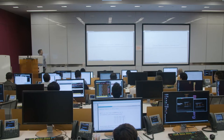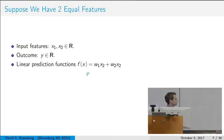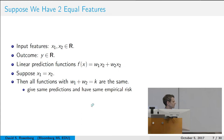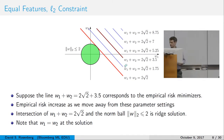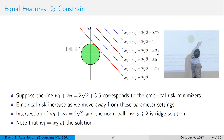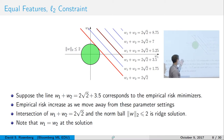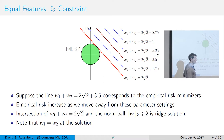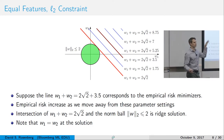Let's look at a picture. Two equal features, a linear prediction function — some linear combination of x1 and x2. All parameter values on the line w1 plus w2 equals some constant k give the same predictions and the same empirical risk, because as long as w1 and w2 have the same sum, it's literally the same prediction function. This brown line — w1 plus w2 equals 2√2 + 3.5 — is the set of empirical risk minimizers. With duplicate features, we get a line of solutions, because there are all these equivalent representations of the exact same function.